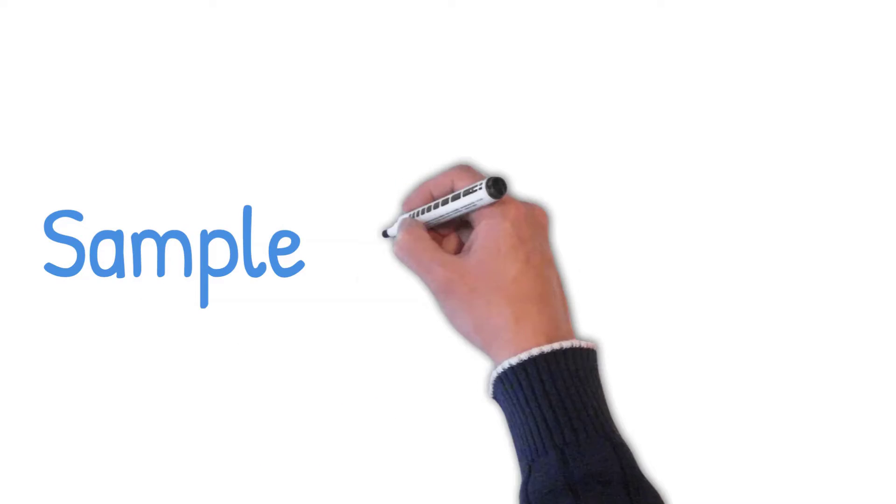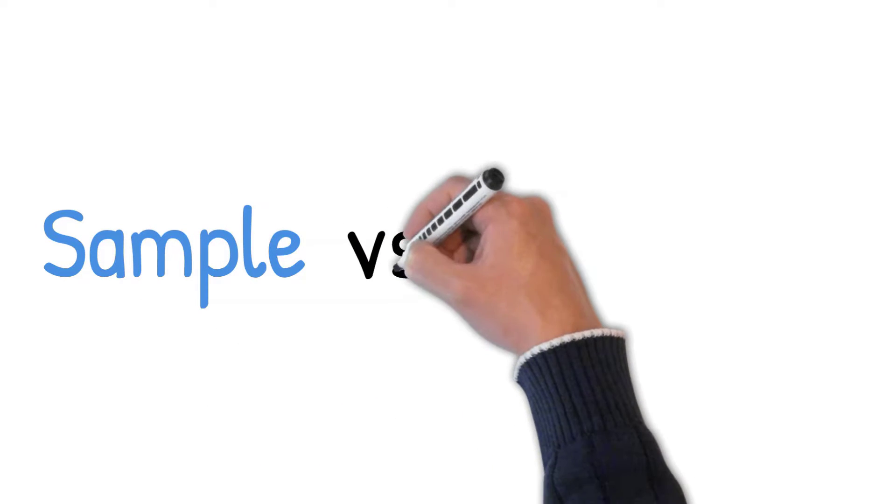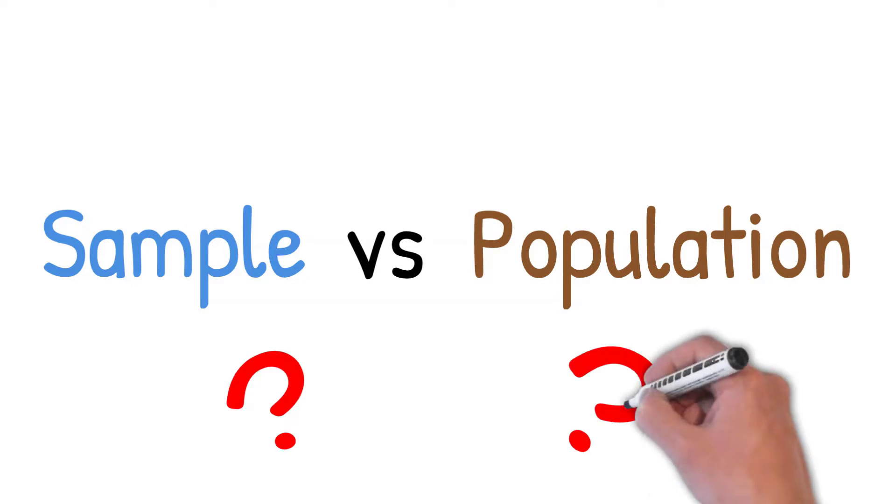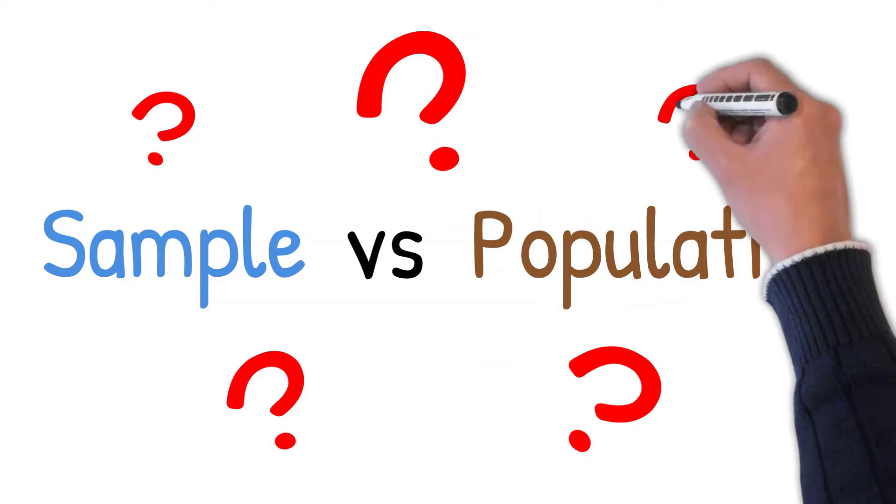In statistics, there are some terms that frequently come up. Two of these are a sample and a population. In this video tutorial, I will explain what a sample and a population is in terms of statistics and I'll give you an example of each.